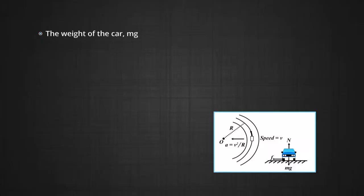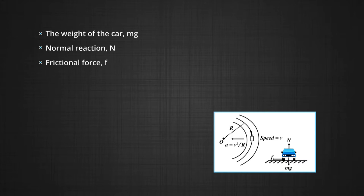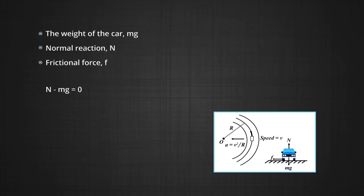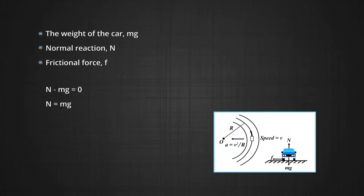When the car is moving on a curved level road, three forces act on it: the weight of the car mg, the normal reaction N, and the frictional force f. There is no acceleration in the vertical direction, so the net force along this direction must be zero. Balancing the vertical components, we find N minus mg equals zero, meaning the upward and downward forces cancel. This means N is equal to mg.